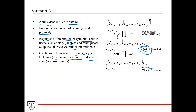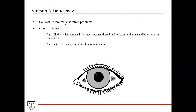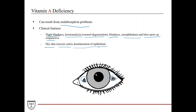Vitamin A can also be used to treat severe acne in the form of oral isotretinoin. Vitamin A deficiency results from malabsorption of fat-soluble components. Clinical features include night blindness, keratomalacia (corneal degeneration) that can progress to blindness, xerophthalmia, and Bitot spots on the conjunctiva — characteristic spots that appear on either side of the eye. Patients also present with dry skin, xeroderma, and keratinization of the epithelium.